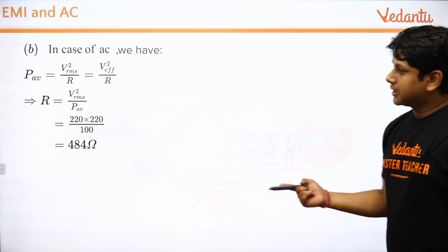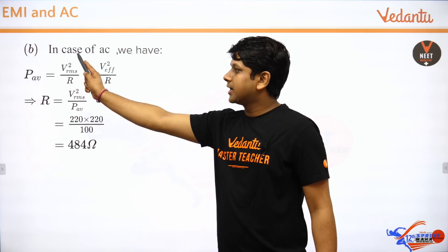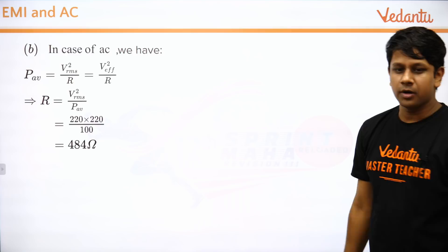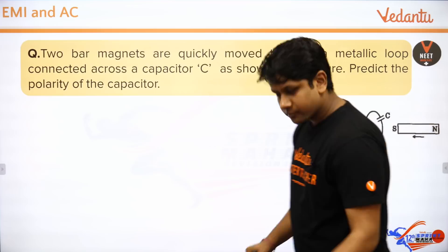Second part: find RMS and average power. The simple formula is P = V_RMS² / R. You can use this formula directly.